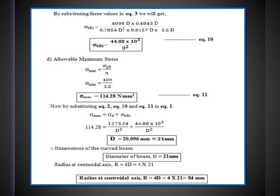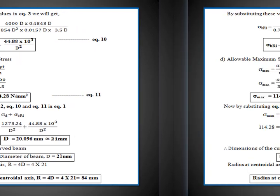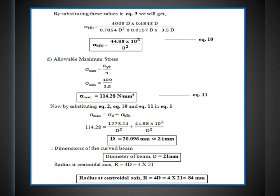Substituting equations 2, 10, and 11 into equation 1: 114.28 = 1273.24/D² + 44.88×10³/D², giving D = 20.096 mm ≈ 21 mm. Therefore, diameter D = 21 mm and radius at centroidal axis R = 4D = 4 × 21 = 84 mm. This completes the solution.